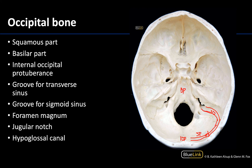Fairly obvious here is the foramen magnum — that big hole in the middle of the occipital bone. Here again you have the jugular foramina, so the sigmoid sinus leads into the jugular foramen. The portion of the jugular foramen belonging to the occipital bone is referred to as the jugular notch of the occipital; there is also a jugular notch of the temporal bone, and together they form the jugular foramen. Lastly, let's identify the hypoglossal canals — looking toward the foramen magnum region and heading towards the basilar part, these openings allow the hypoglossal nerve, cranial nerve 12, to exit the skull.